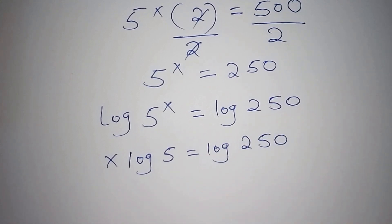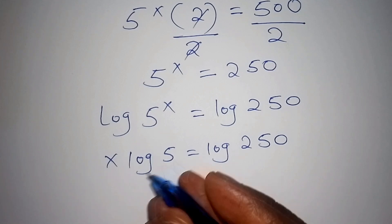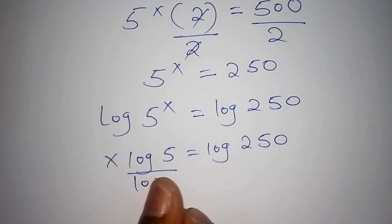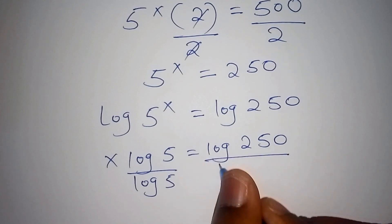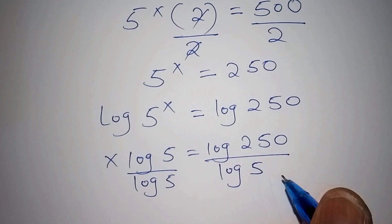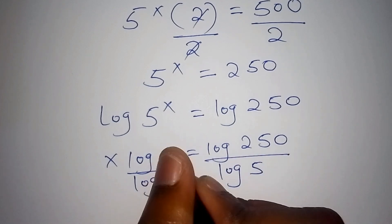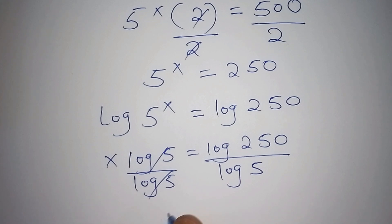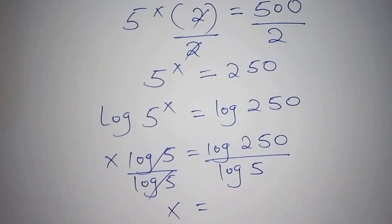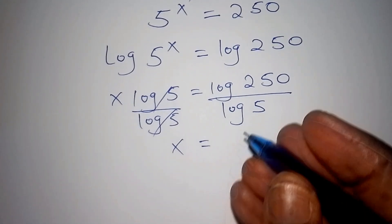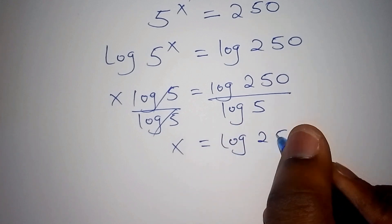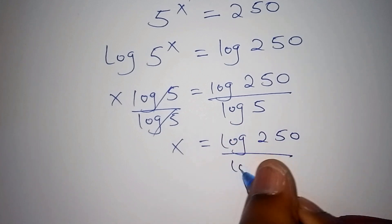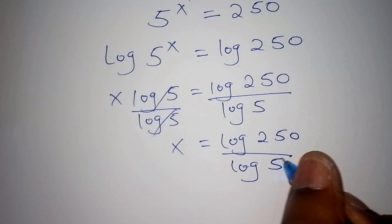From there, we divide both sides by log of 5. The log 5 on the left cancels, so x equals log of 250 all over log of 5.